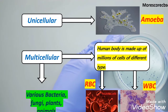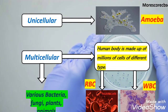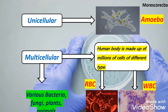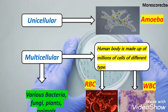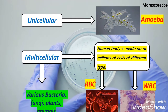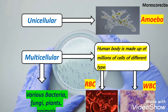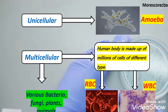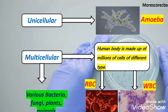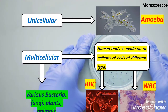An example of a unicellular organism is amoeba. An example of a multicellular organism is humans. The human body is made up of millions of cells of different types — for example, RBC, which carries blood to all parts of the body, and WBC, which provides immunity to our body.